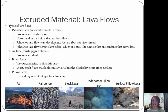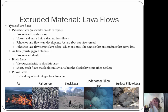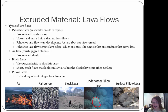Pahoehoe is not like that at all. Next we have block lava, which is viscous and acidic to rhyolitic lava. They're short, thick flows that look similar to aa, but the blocks have smoother surfaces. Then we have pillow lavas, which form along oceanic lava flows. As lava comes up on the ocean floor, it creates a little bulb, cools around it, then breaks through one side creating another bulb — that's what we see in the image with all these little pillows of lava.